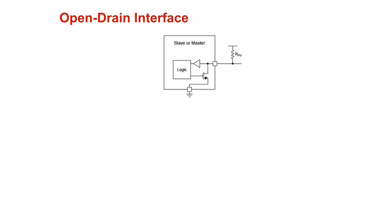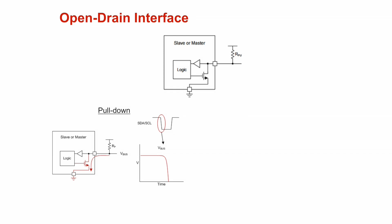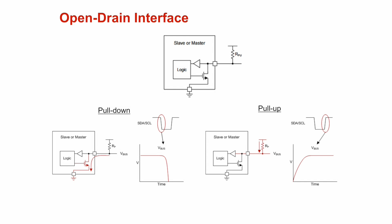The figure shows a pull-up resistor connected to the I2C bus. When the transistor turns on, it pulls down the I2C bus as shown by the red arrow and the waveform. Similarly, when the transistor turns off, the pull-up resistor pulls up the I2C bus as shown by the red arrow and the waveform on the right.